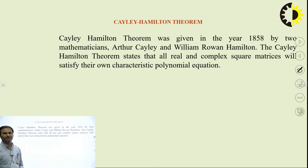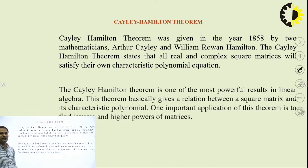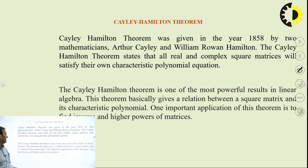Basically, the Cayley-Hamilton theorem helps us to calculate the real and complex square matrix which satisfy the characteristic equation. This theorem helps us to find the relation between the matrix and its characteristic equation. This theorem is a very powerful and most important result in linear algebra, giving the relationship between the square matrix and the characteristic polynomial.